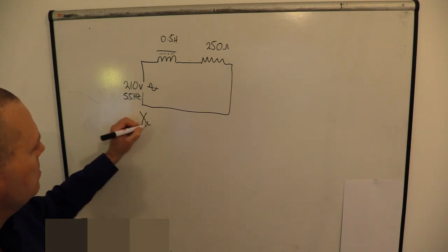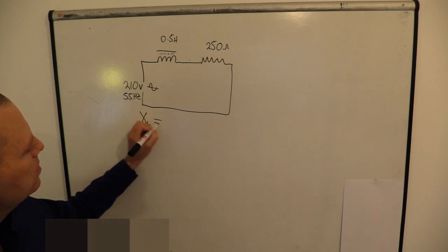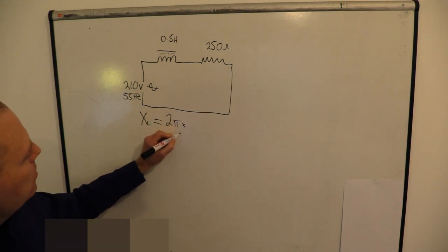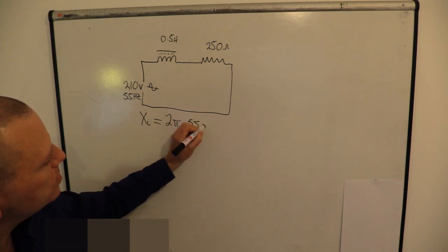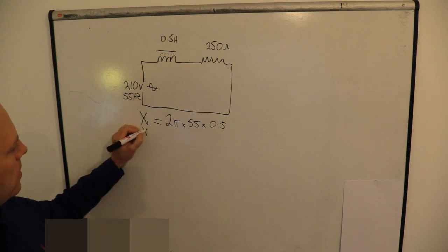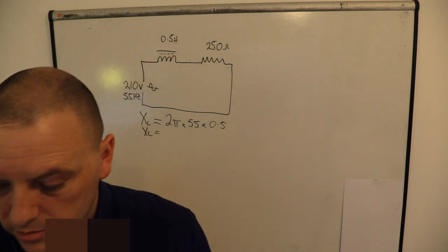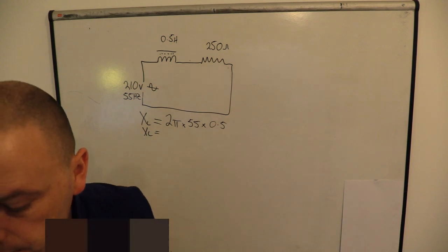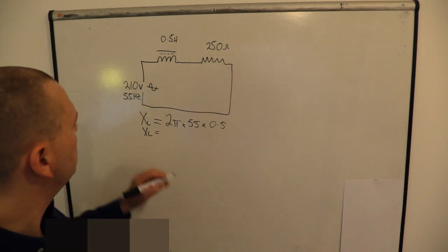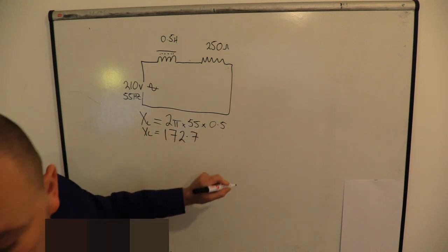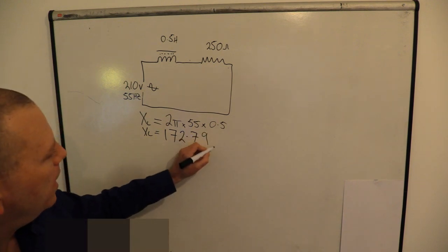The symbol for inductive reactance is XL — L being inductive and X being reactance. The formula for that is 2 times pi times the frequency times the inductance in henries, in this case 0.5. So our XL is simply plugging that in: 2 times pi times the frequency of 55 times 0.5, and we have an inductive reactance of 172.79 ohms.